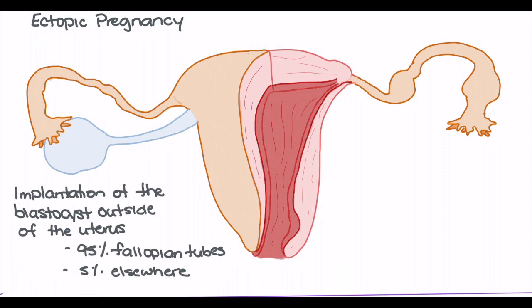Ectopic pregnancy occurs when we have implantation of the blastocyst outside of the uterine cavity. Ectopic pregnancy makes up about 1.2 to 1.4% of all pregnancies. In terms of where the blastocyst is going to implant, 95% of all ectopic pregnancies occur in the fallopian tubes, while the other 5% occur elsewhere.